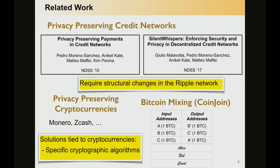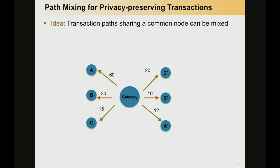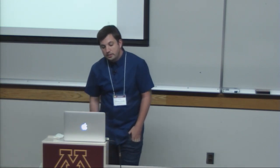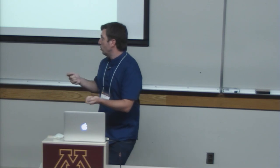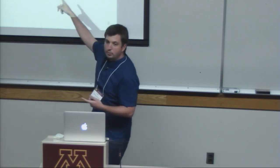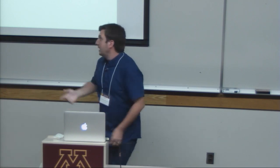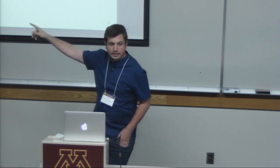Given that, the natural thought we had is: what if we actually mix the paths of several transactions? The idea is that it is possible to mix transaction paths as long as they share a common node, like the example depicted in this figure. Our goal is to hide who is paying to whom from the input wallets on the left to the output wallets on the right, assuming we have an adversary that can control up to N-2 input wallets in the system.